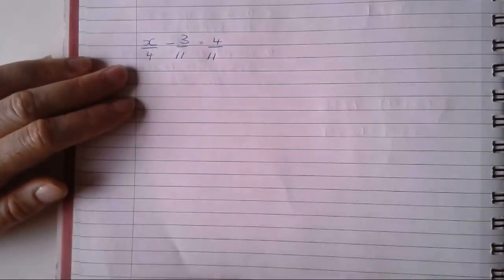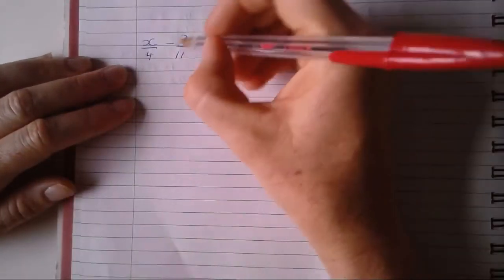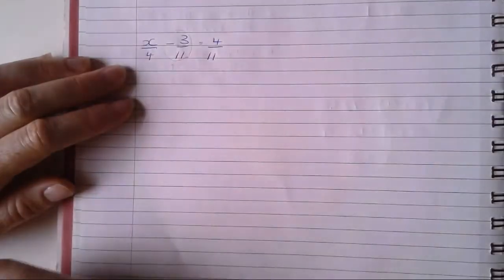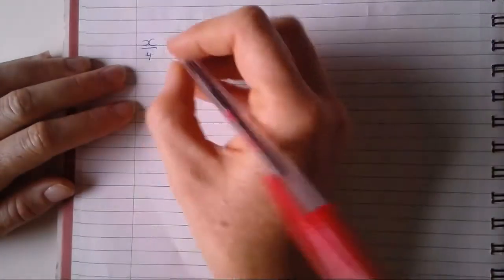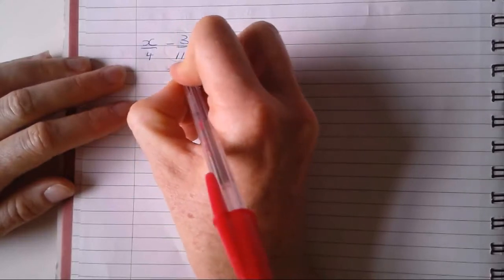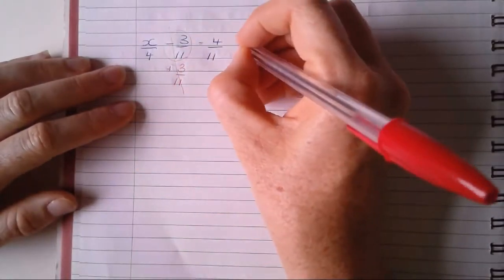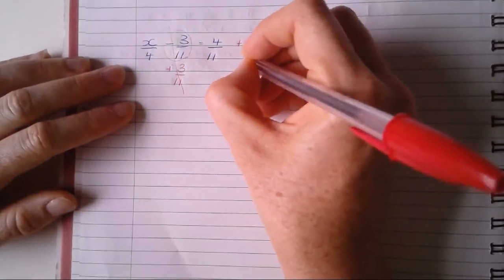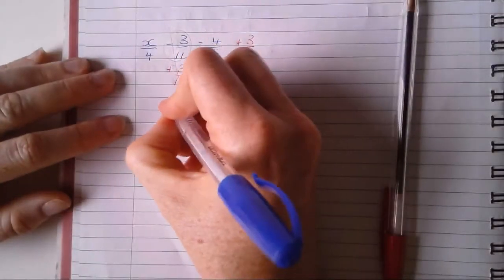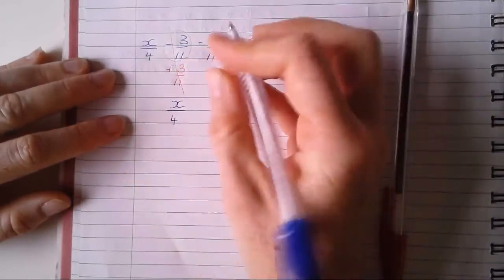So I'm going to remove my take three over eleven first. Now the inverse of that is, of course, plus. So I need to do that on both sides. Now I rewrite my equation. Super important. Always do that, please.